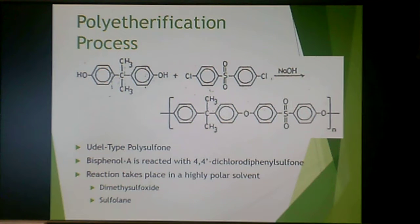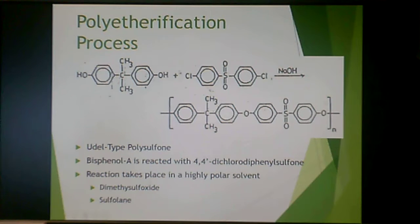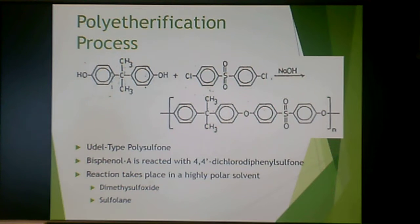This is the polyetherification process, which produces the Udel type of polysulfone. Here we have bisphenol A, and you react that with 4,4'-dichlorodiphenyl sulfone in the presence of sodium hydroxide to get this particular type. It takes place in a highly polar solvent — either DMSO (dimethyl sulfoxide) or sulfolane — both of which are really expensive solvents.